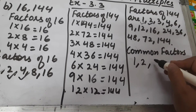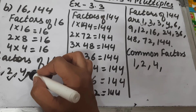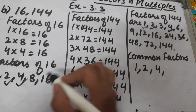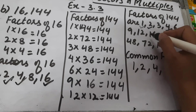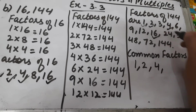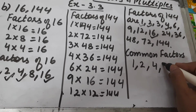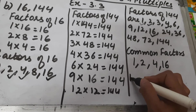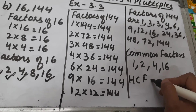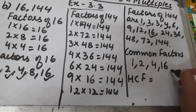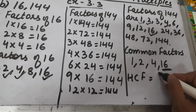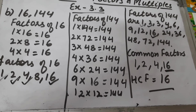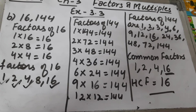Now, the common factors of 16 and 144 include 1, 2, 4, 8, and 16. The largest common factor is 16, so the HCF is 16. That is part B of question one.